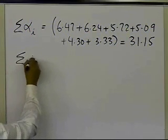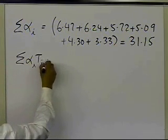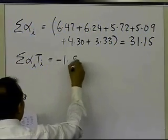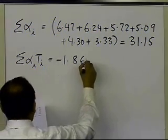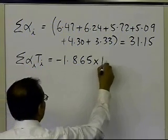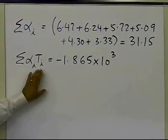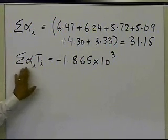Similarly, you can calculate the summation of alpha_i times t_i, which turns out to be minus 1.865 times 10 to the power 3. That's the summation when you multiply each alpha value by its corresponding temperature value and add them up.